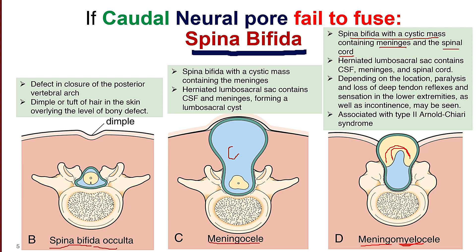One high yield point is that meningomyelocele is often associated with Chiari type 2 abnormality. We will discuss Chiari types 1, 2, 3, and 4 in more detail elsewhere, but we must keep in mind that meningomyelocele is generally associated with Chiari type 2 abnormality.